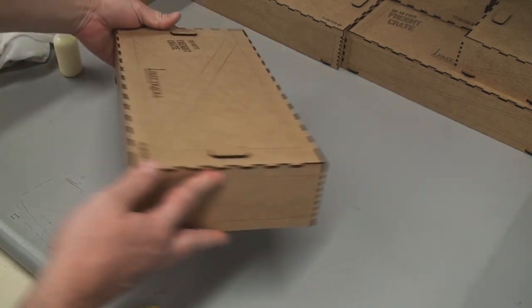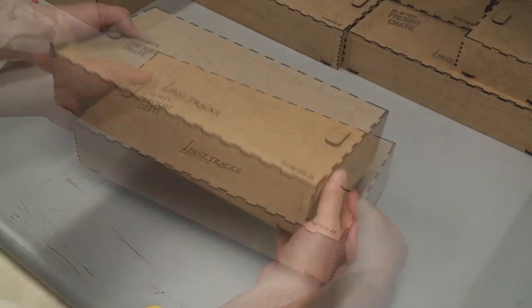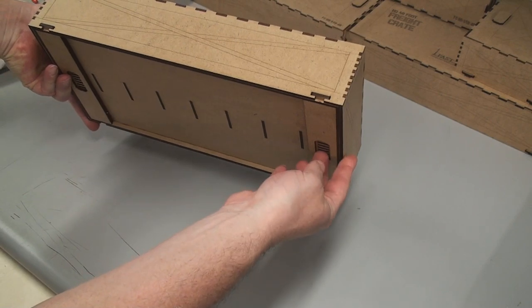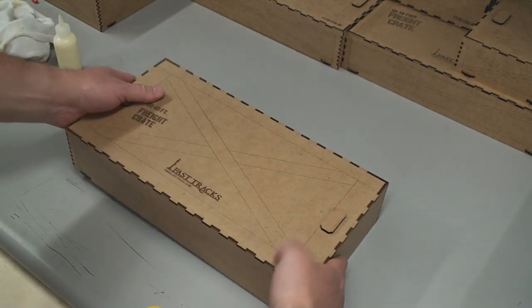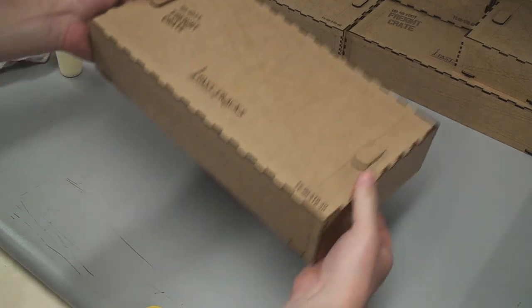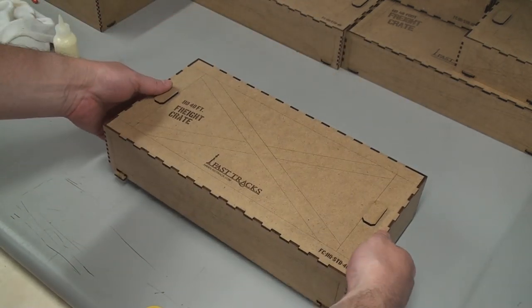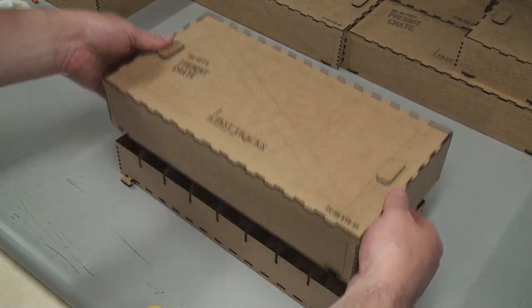And now you can carry everything like that. And you don't have to worry about it falling open. To open it, you just slide these keys out like so. Now, you don't want to be flipping the box over when it's full of train cars. But you can do that just by hooking your fingers onto the keys and taking the lid off like so.